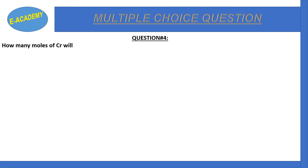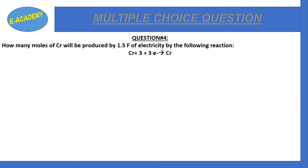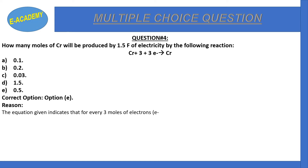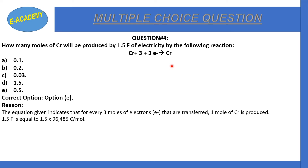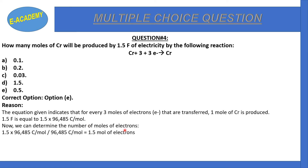Question number 4: How many moles of chromium will be produced by 1.5 Faraday of electricity given the reaction Cr³⁺ + 3e⁻ → Cr? Options: 0.1, 0.2, 0.03, or 0.5. The correct option is 0.5. The equation shows 3 moles of electrons produce 1 mole of chromium. 1.5 Faraday equals 1.5 × 96,485 coulombs, and dividing by 96,485 gives 1.5 moles of electrons.